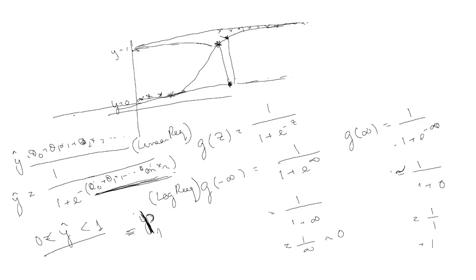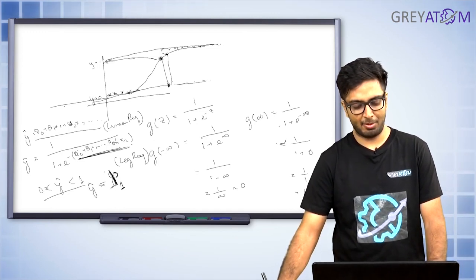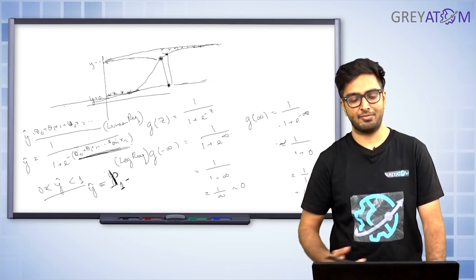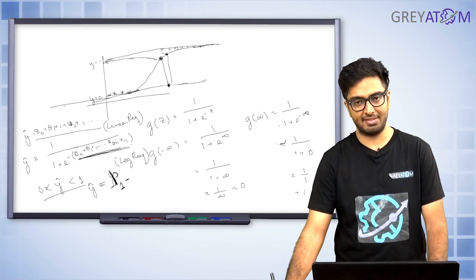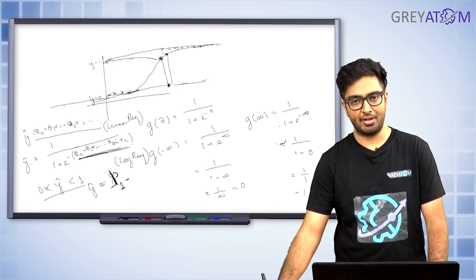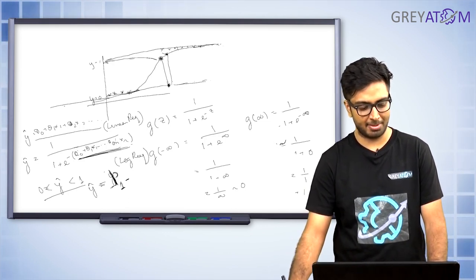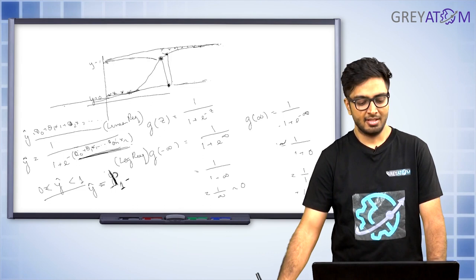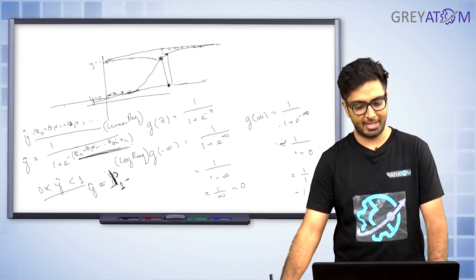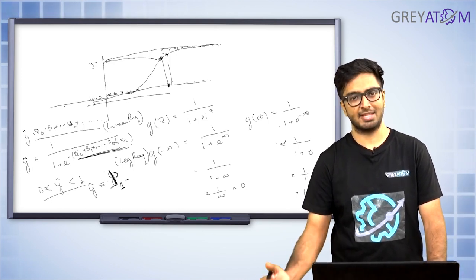So y-hat is nothing but the probability of a given data point belonging to class 1. For any given data point with features x1 and x2, once you've fitted logistic regression and obtained theta 0 and theta 1 values, you can calculate the y-prediction. That continuous number that comes out is the probability of that particular data point belonging to class 1.